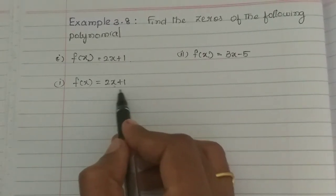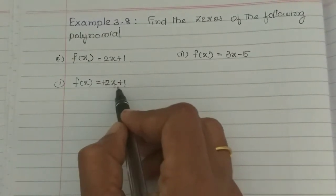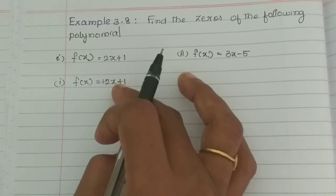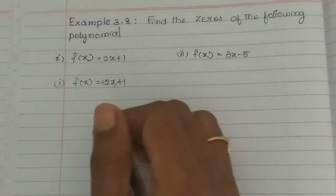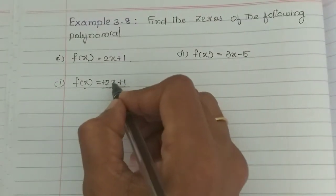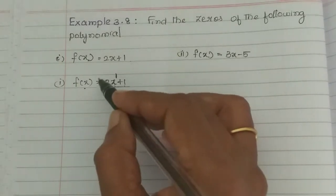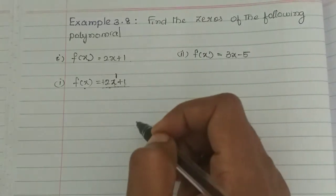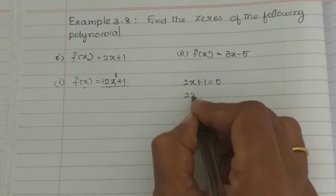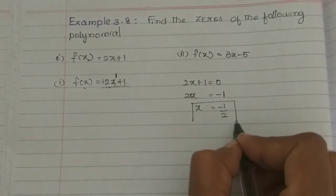If you want to substitute x through the zeroes, you look at this expression — it is a linear expression. Linear means x to the power 1. So, 2x plus 1 equals 0, which gives 2x equals minus 1, and therefore x equals minus 1 by 2. This is the division, so the x value is minus 1 by 2.